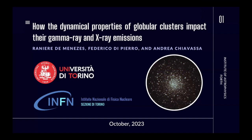Today we are going to talk about globular clusters and, in particular, how the dynamical properties of these clusters impact on the gamma-ray and X-ray emission. It's typically a surprise to audiences of astronomers that globular clusters emit gamma rays, because they think: we have basically only stars in globular clusters — these are thermal objects. How can thermal objects emit gamma rays? Actually, the scenario is a bit more complicated than that.